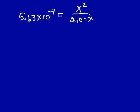What you end up with is this equation: 5.63 times 10 to the minus 4th, that's what KB is equal to, is equal to x squared over 0.10 minus x.